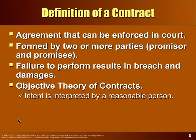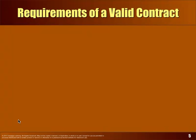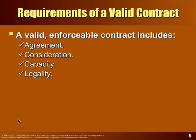Courts will look at how the parties acted as if there was a contract, or maybe that there wasn't a contract. To have a contract, you need these four elements: agreement, consideration, capacity, and legality.